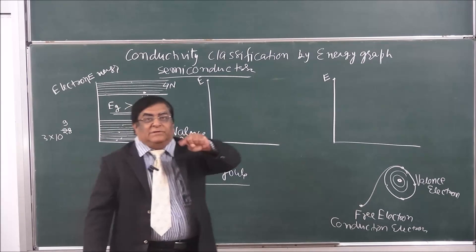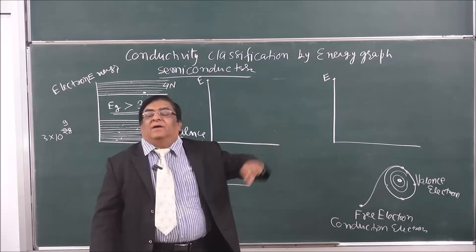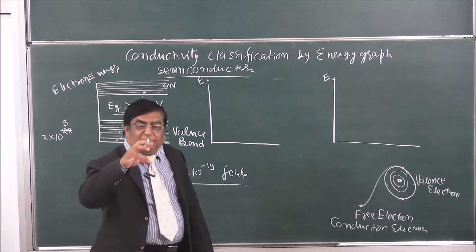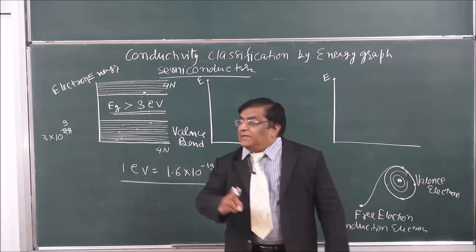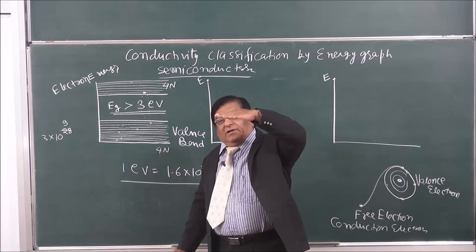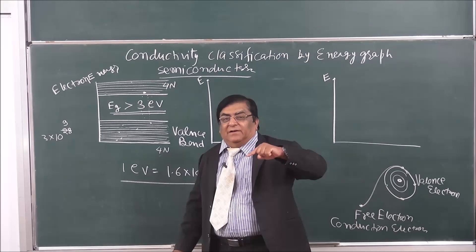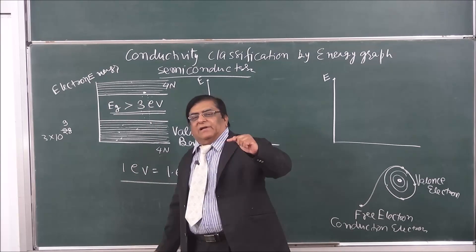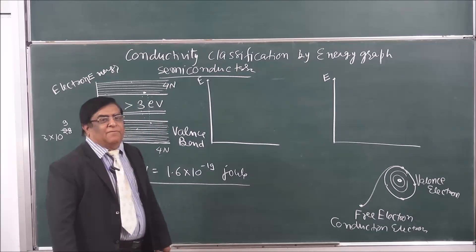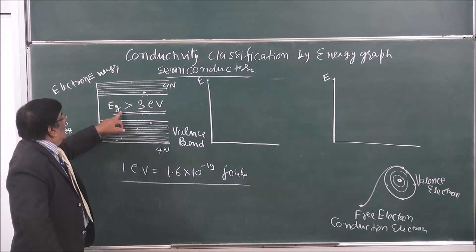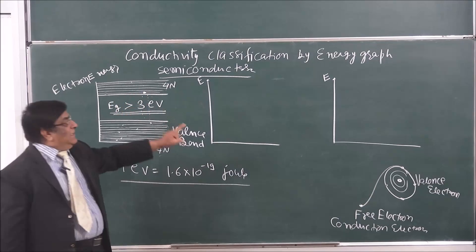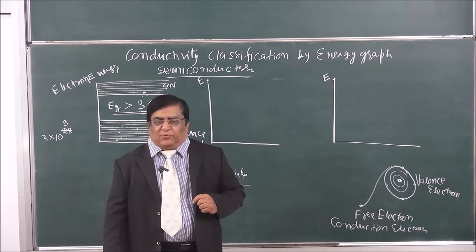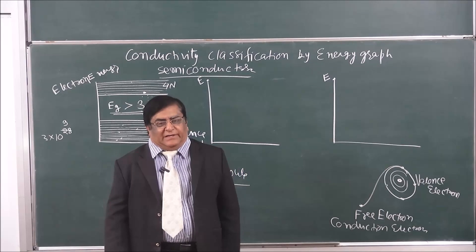Converting that energy comes to nearly 9 × 10⁹ joules — an enormous quantity of heat. Before the insulator could absorb that heat, it would reach its ignition point and start burning. So it is not possible to convert a good insulator into a conductor practically. All materials with an energy gap larger than 3 electron volts cannot be converted into conductors — these are insulators.